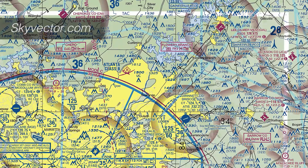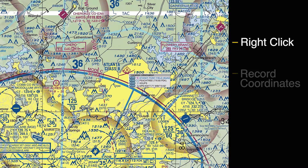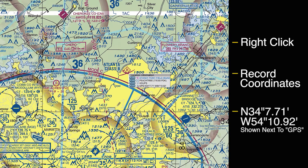SkyVector is a great resource to have in your toolbox. If we right-click anywhere on the sectional chart here, the drop-down list will automatically give us the coordinates of where we clicked, right next to where it says GPS.